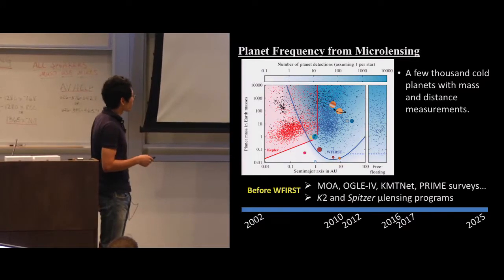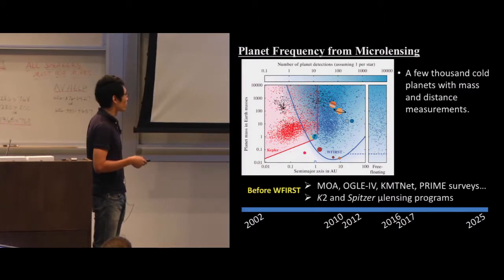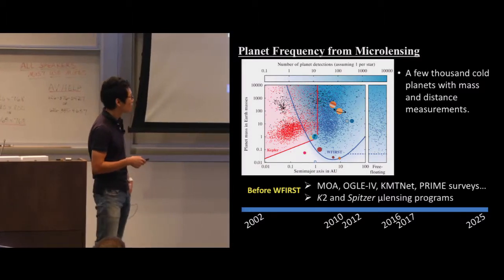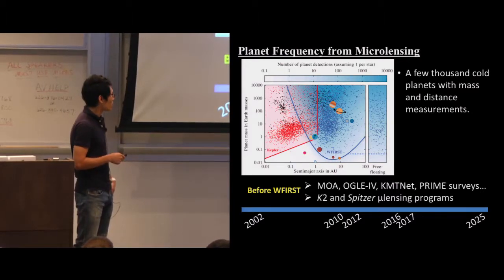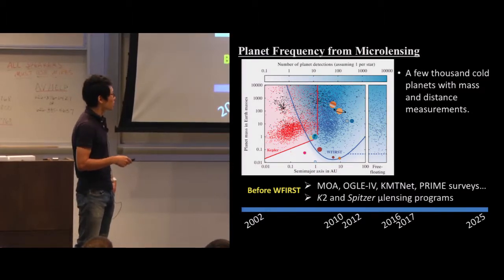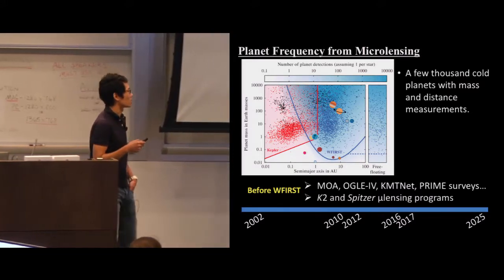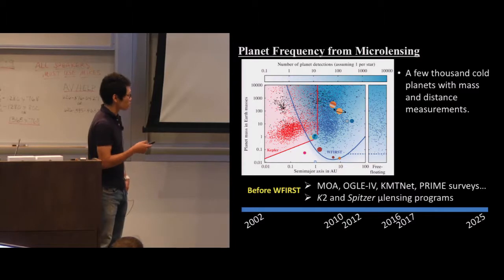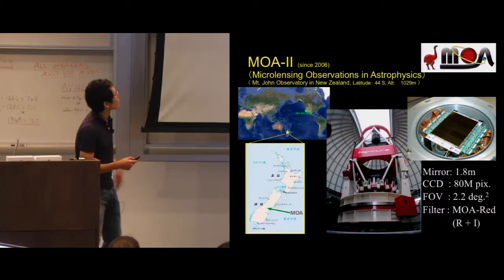Before WFIRST, we will study the mass function further using MOA, KMTNet, and hopefully the PRIME infrared microlensing survey. We can also constrain the true mass function — not just mass ratio — using K2 and Spitzer microlensing programs. Lens flux measurements, as JP mentioned, are also important. For now, I will focus on the MOA results.